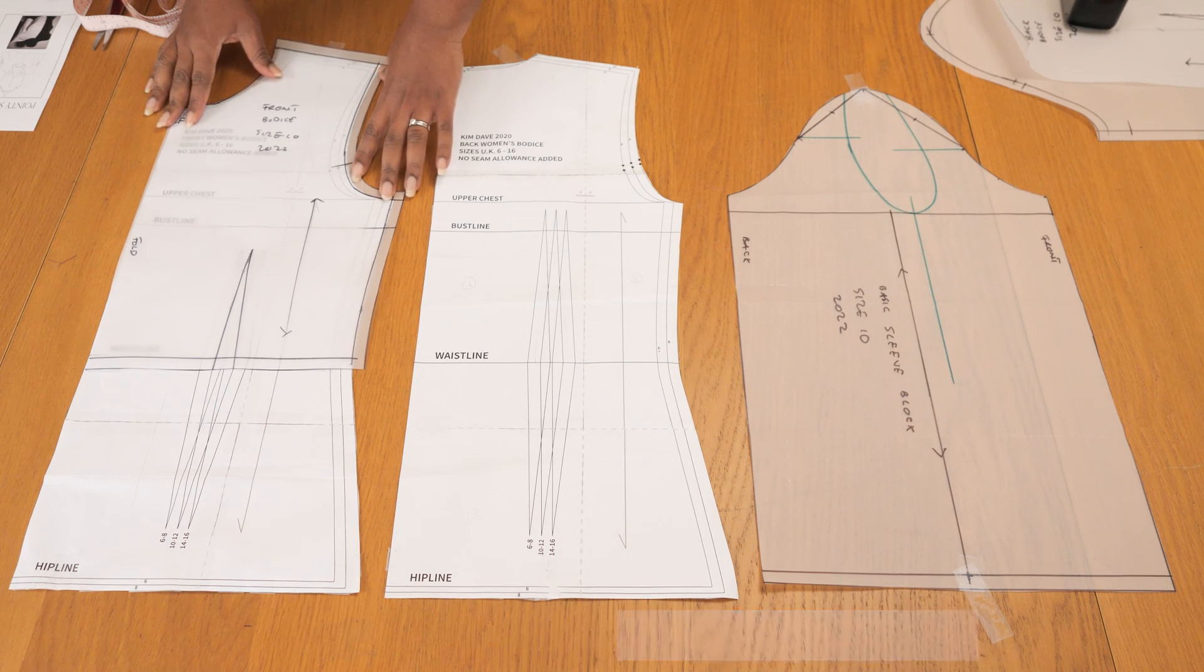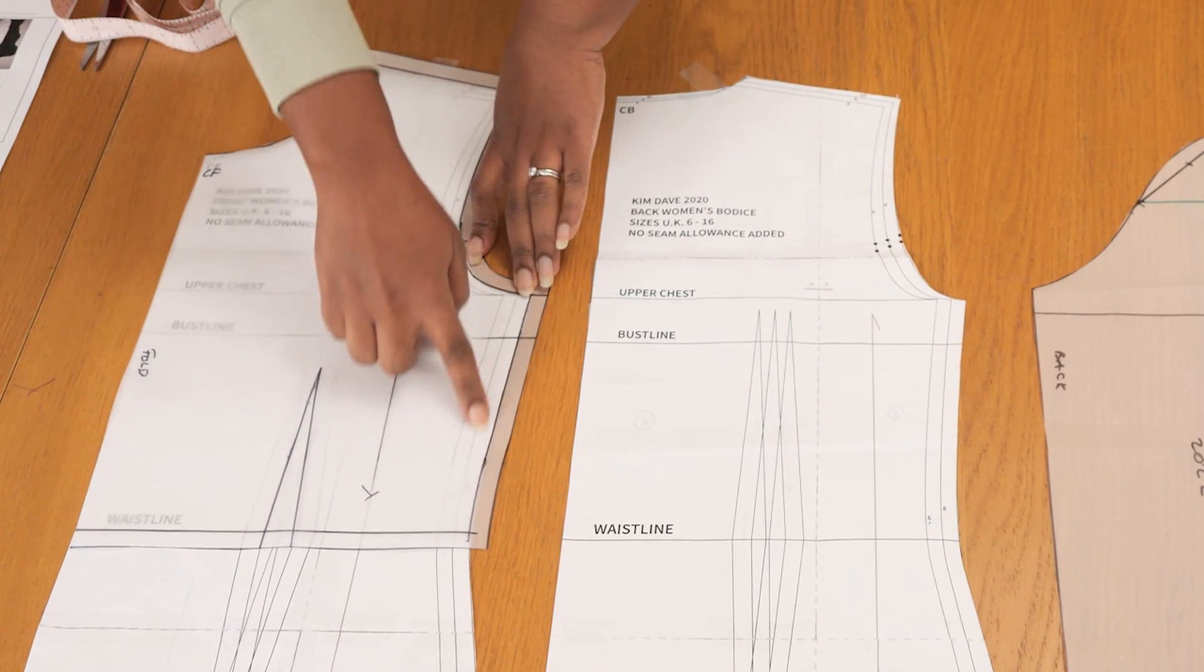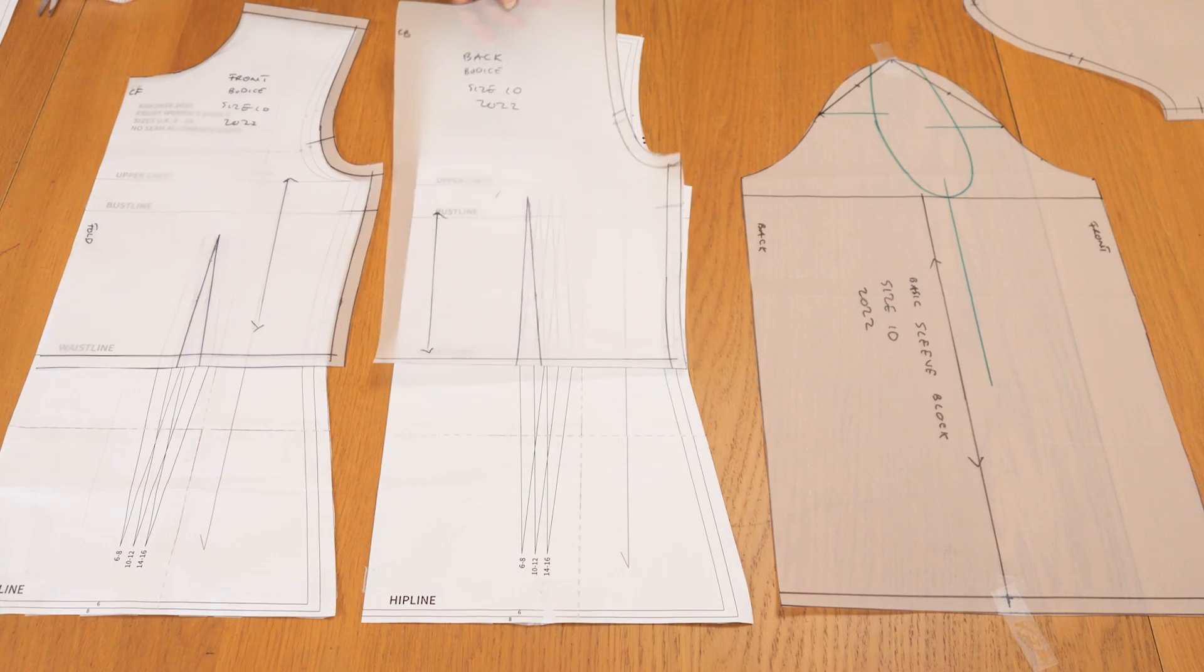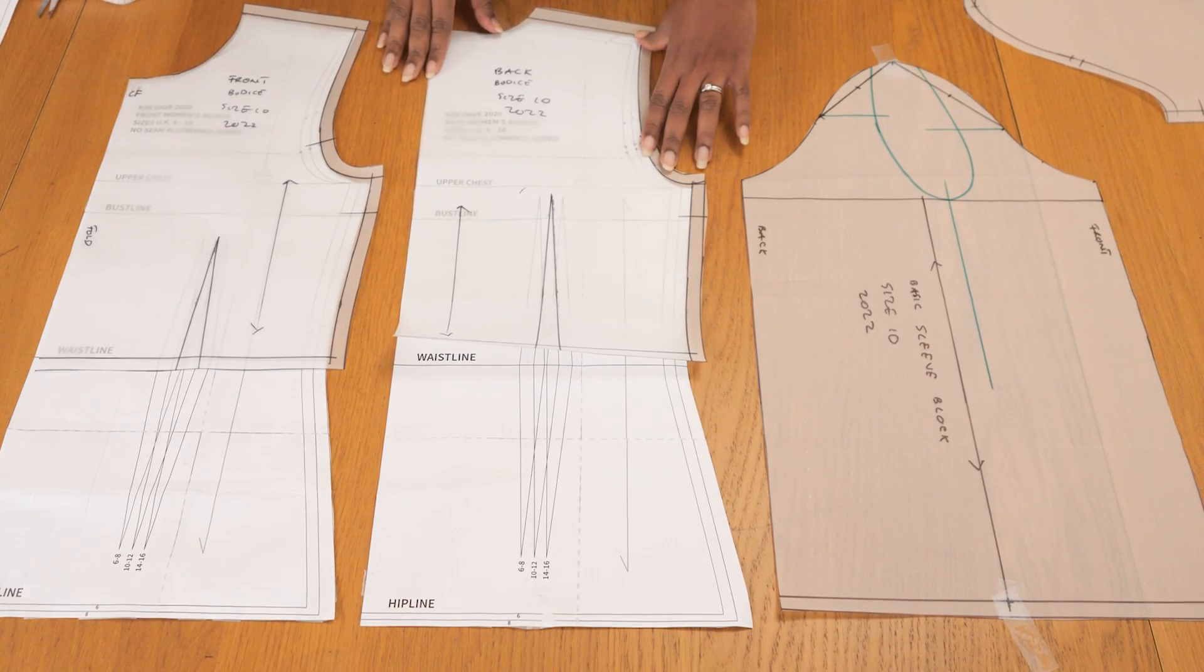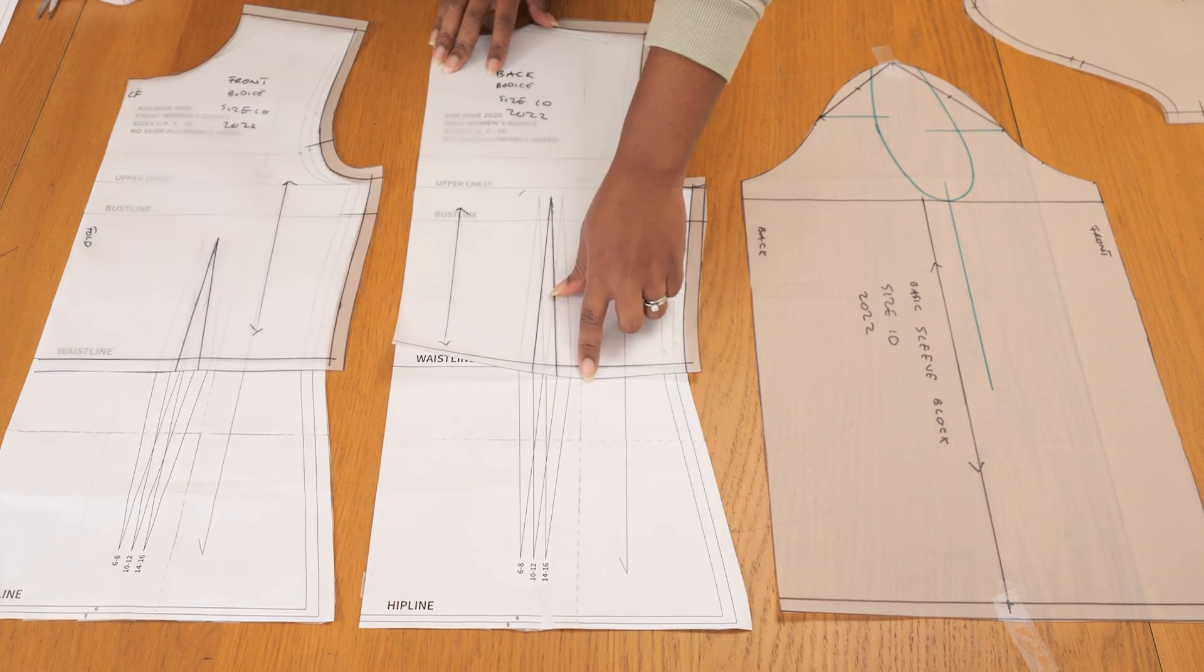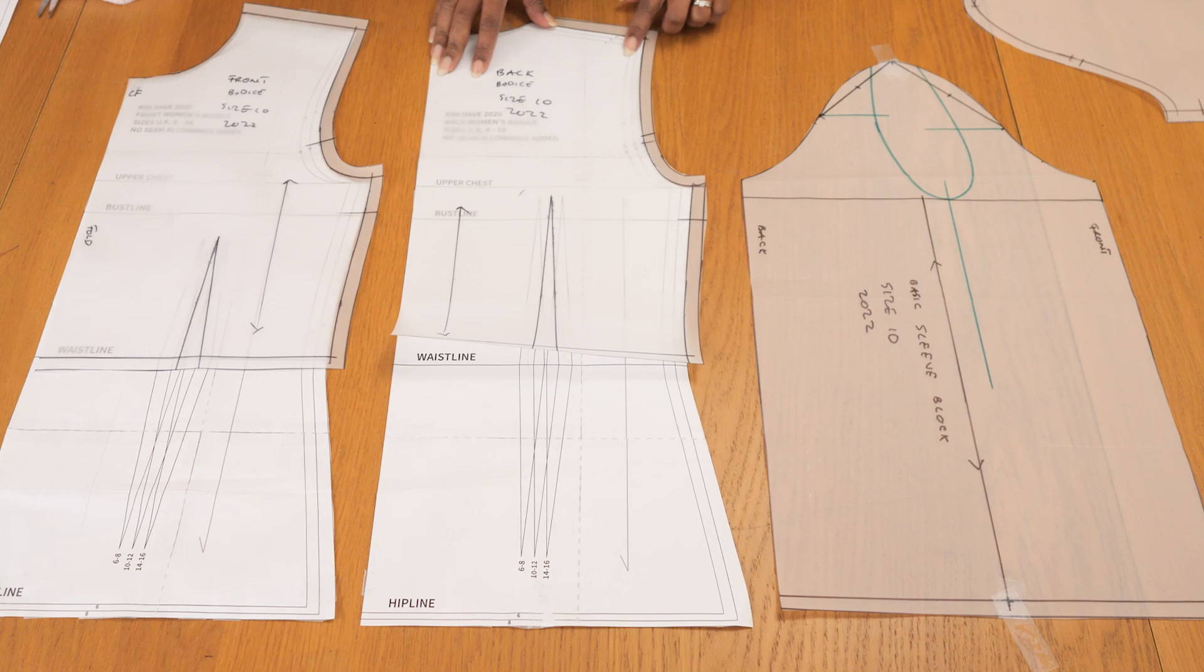I'm going to be needing a basic sleeve. This one I have a separate tutorial for as well. You can also work with any commercial pattern in a basic bodice or a basic sleeve if you don't want to make one from scratch. And the first thing I've done here is I've traced off the top half of my basic bodice, transferred the notch points, the grain lines, as well as any other useful information I'll need.